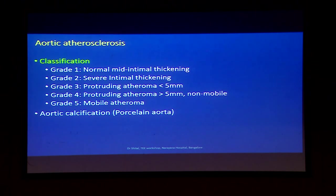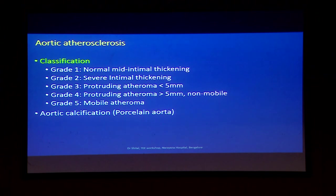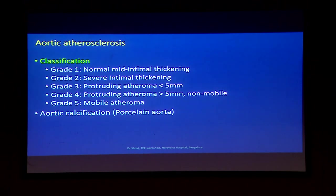Coming on to atherosclerosis — very commonly in the elderly, associated with age, elevated cholesterol, and hypertension. More common in the descending thoracic aorta. Grading is 1 to 5: 1 is normal, 2 is severe thickening, Grades 3 and 4 have atheromas less than 5 mm or more than 5 mm respectively, and Grade 5 has mobile atheromas.